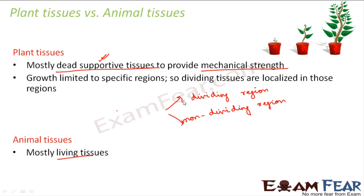In case of plants, growth is not uniform in all regions — it is specific to certain regions. Therefore, the dividing tissues, meaning the tissues with the capability to divide, are localized in those dividing regions. Only if tissues divide can plants grow — one cell divides to form two cells, those two form four, those four form eight — that is how the number of cells increases and growth takes place. So dividing tissues in plants are localized wherever growth is more.